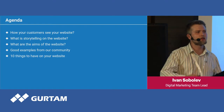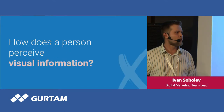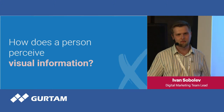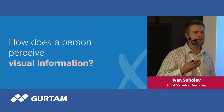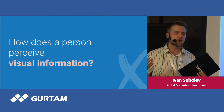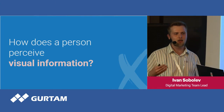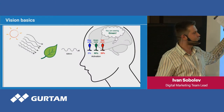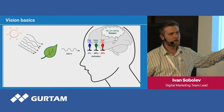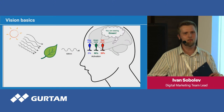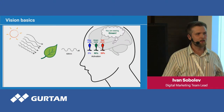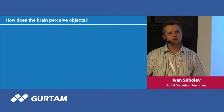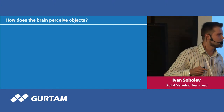Before we start talking about how your customers see your website, we must answer the question about how a person perceives visual information. It's a common mistake that when people see something — it may be a website or some kind of an object — our eyes and our brain work like a camera. But that's not true. When light falls on some object, your eyes capture the light, you see some colors, you see some lines, and then your brain works in conjunction with your eyes.